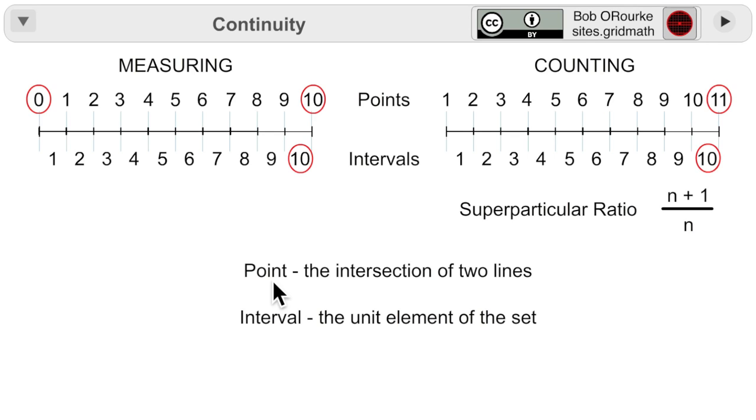Now, this imagery is from the decimal line video. A point is the intersection of two lines, and the interval is the unit element of a set.